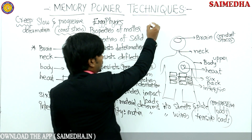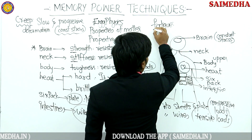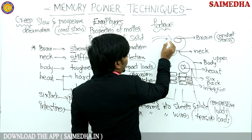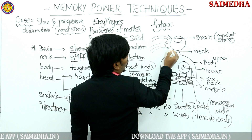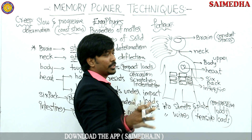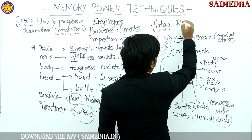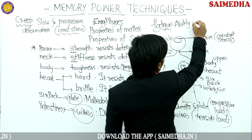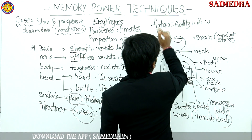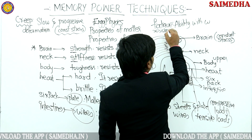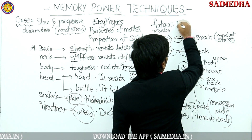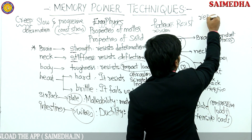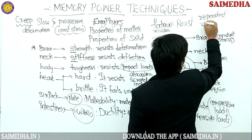Last property: fatigue. If repeated reversible loads are applied over this body, the body is going to fail. Fatigue is the ability — or fatigue resistance — with which a material resists the repeated application of load, i.e., repeated reversal loads.